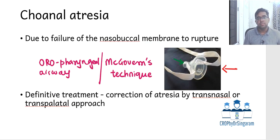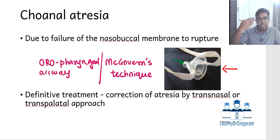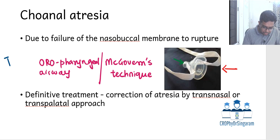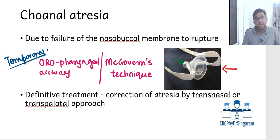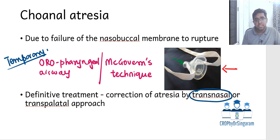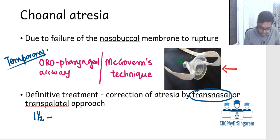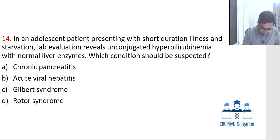Choanal atresia is due to failure of the nasobuccal membrane to rupture. The oropharyngeal airway or McGovern technique is only a temporary solution. Once the baby grows older, the definitive procedure — trans-nasal or trans-palatal correction — is planned, with trans-nasal technique generally preferred. The usual timing for definitive surgery is between 1.5 to 2 years of age.